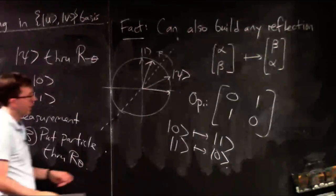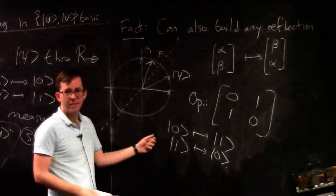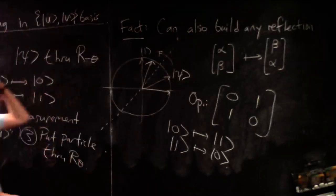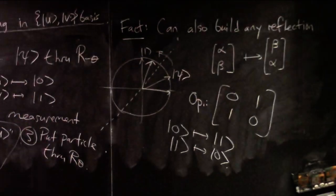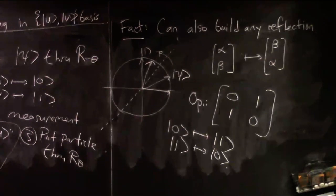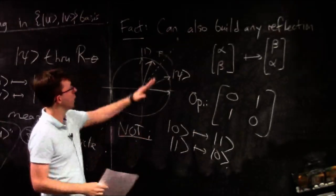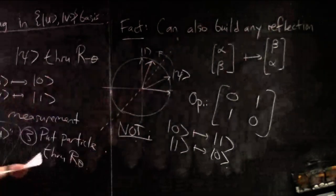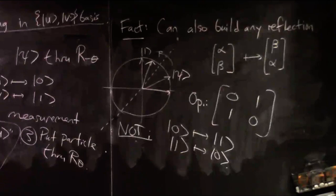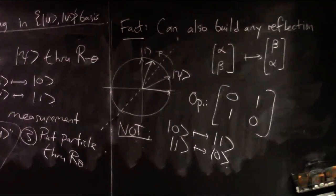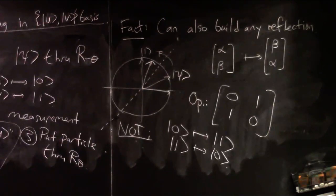Do you know what this operation is called? It's called the NOT gate — the quantum NOT gate. I might start calling these operations 'gates,' because the main thing we're going to do in this course is build little circuits out of them — quantum circuits. By analogy with Boolean circuits, these little operators are called gates, like AND gates, OR gates, NOT gates. This is called the NOT gate. Geometrically, it's a reflection of the qubit state through 45 degrees. Quantum people also call this gate X, capital X.